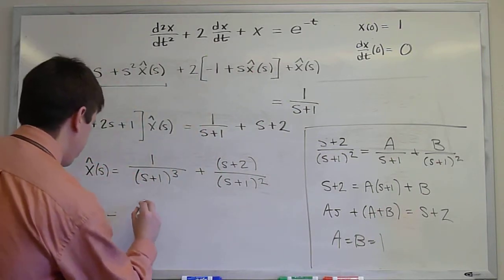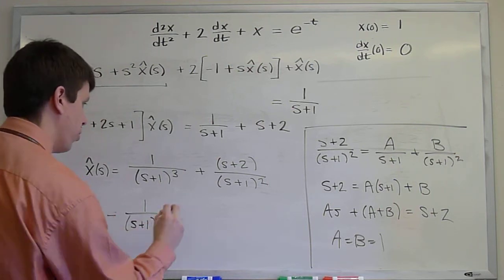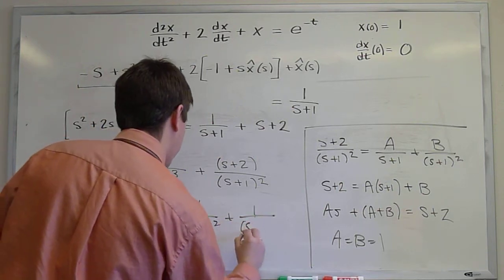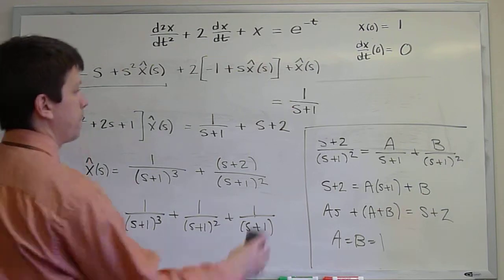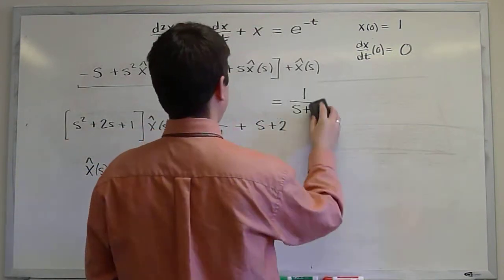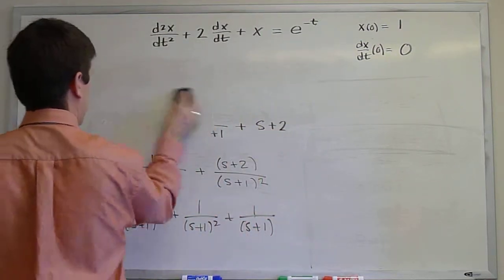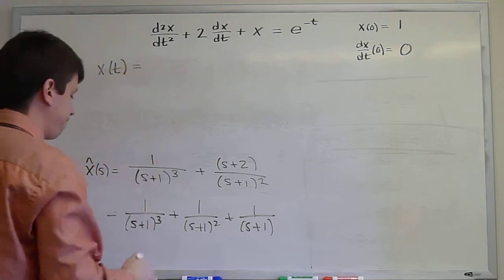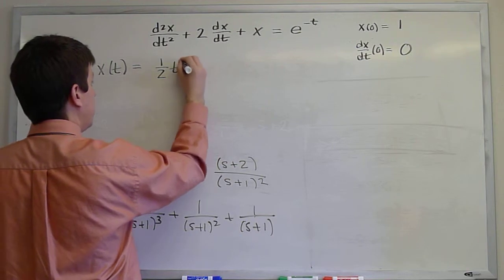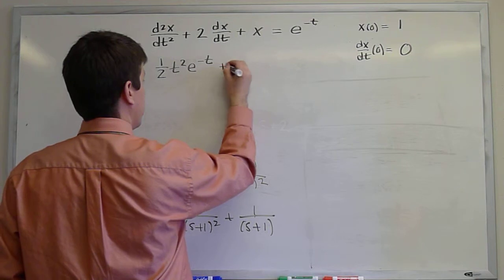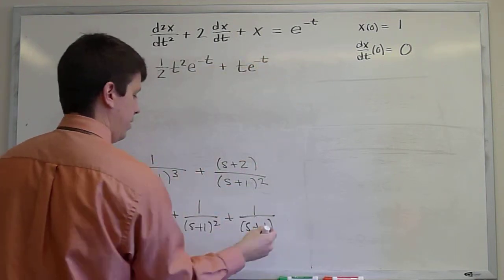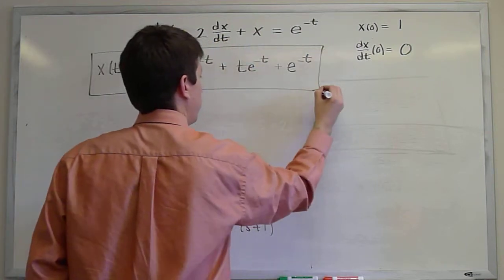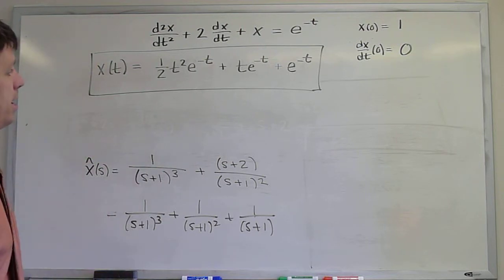So we're now ready to take the inverse Laplace transform. We have our 1 over s plus 1 cubed from before. And then this one we've simplified into 1 over s plus 1 squared plus 1 over s plus 1. And we simply need to take the inverse Laplace transform. And that's just simply done. We can look these up on the table and read them straight off the table. This one becomes 1 half t squared e to the minus t. This one becomes t e to the minus t. And this one becomes e to the minus t. The Laplace transform is a linear operator, and so we can simply go term by term looking these up on the table, and we get this solution from that process.